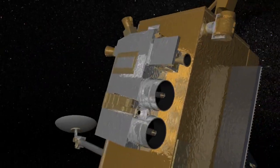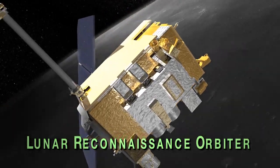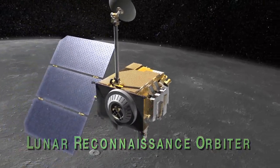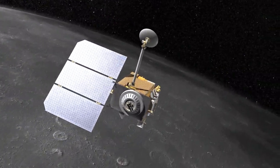For those that don't know, LRO is the Lunar Reconnaissance Orbiter. It's a NASA spacecraft that's been orbiting the moon since June of 2009, taking high-resolution pictures of the surface.